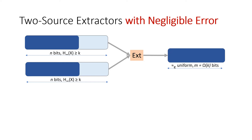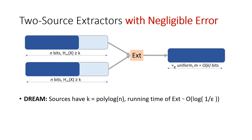A recent breakthrough work of Chattopadhyay and Zuckerman broke down this barrier and built two-source extractors in the setting where both sources have polylogarithmic min-entropy. These results were further improved in several works. In all these works achieving polylogarithmic min-entropy, however, the running time of the extractor turned out to be inversely proportional to the desired error. In particular, this means that the error cannot be negligible in n, as that would lead to inefficient constructions.